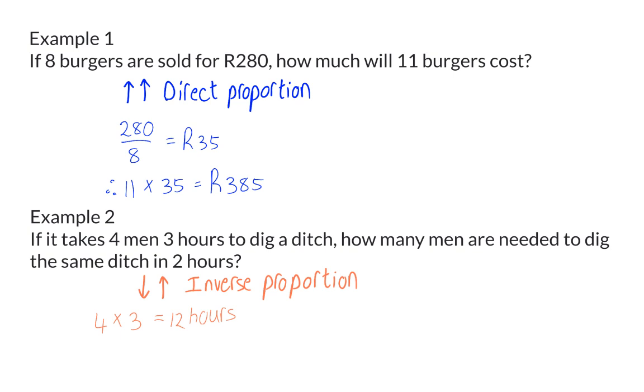We want to know how many men are needed to dig this ditch in 2 hours. That means we need to determine 2 multiplied by what will give us this constant of 12 hours. The easiest way to do this is to say 12 divided by 2. Then we will get 6, which means that 6 men are needed to dig this same ditch in 2 hours.